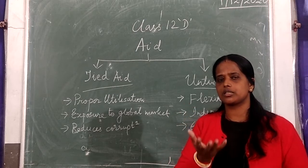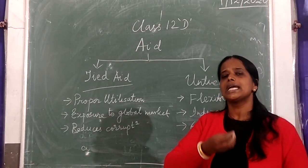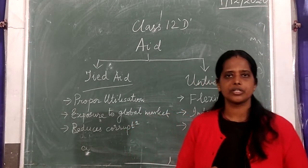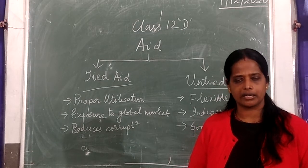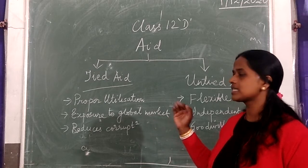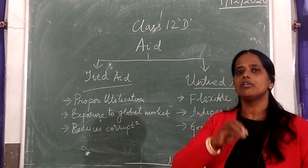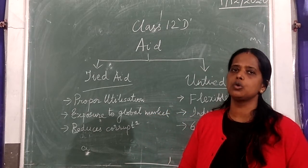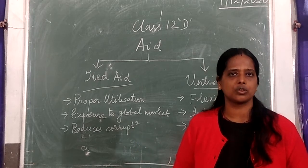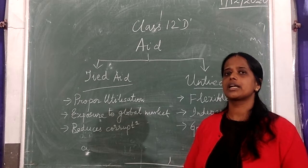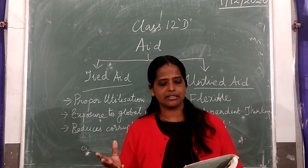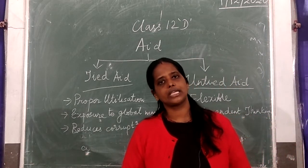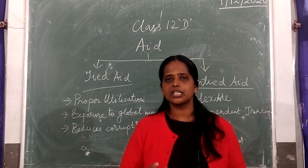The developed country helps ensure that the developing country can export its products to other countries. Another advantage of tied aid is that it minimizes corruption on both sides — because the donor is monitoring very strictly, the recipient country will also try to be fair and just in utilizing the fund. Both the recipient and the donor countries are accountable for proper utilization, which is a significant advantage.